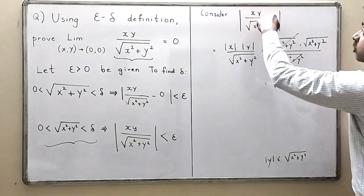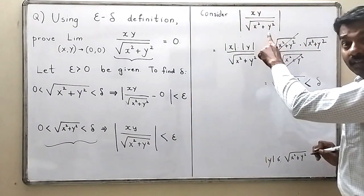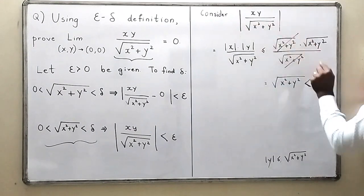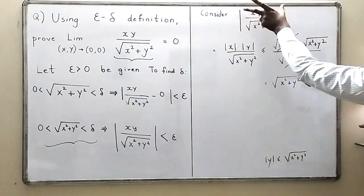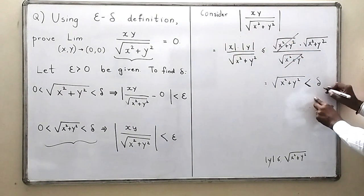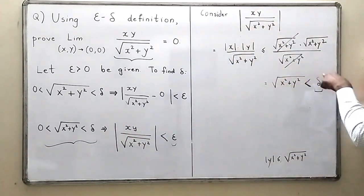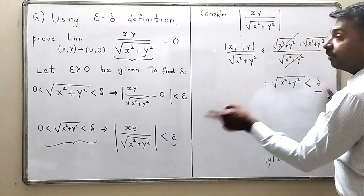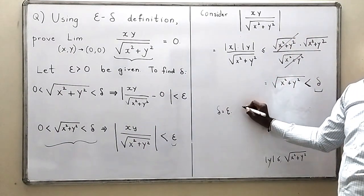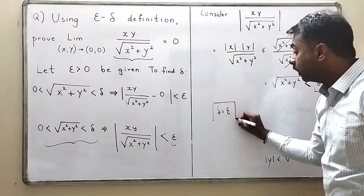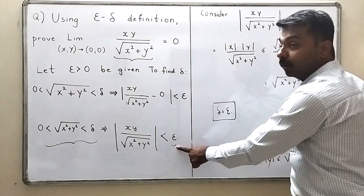So I have that |xy/√(x²+y²)| < delta. But I also know this modulus must be less than epsilon. Since the left-hand side is the same quantity, the right-hand sides must match — so delta must equal epsilon. Therefore, I choose delta = epsilon. Once I find the value of delta, my problem is complete. You can also choose delta smaller than epsilon — there's no problem with that.